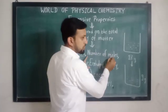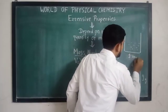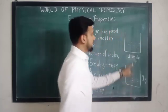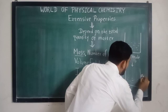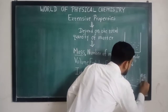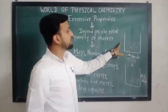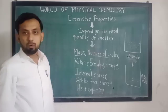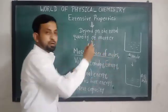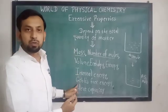Another property: number of moles. That is, if you take one mole of water in a particular beaker and transfer into another beaker — that is if we transfer 0.5 moles — when we divide this system, the property associated with this system is also divided, because it depends on the total content of matter present in the system. Therefore, number of moles is also an extensive property. Similarly, the same concept can be utilized for volume, enthalpy, entropy, and all remaining examples of extensive properties.